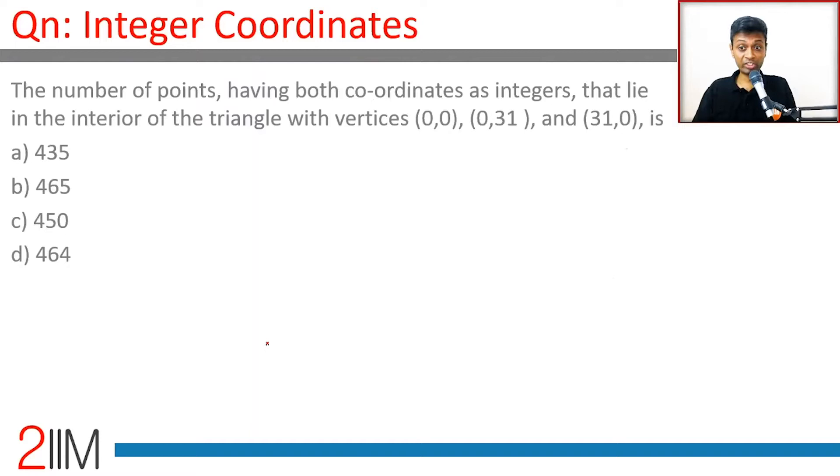The number of points having both coordinates as integers that lie in the interior of the triangle with vertices (0,0), (0,31), and (31,0). Luckily enough, 31 and 31 make this a nice triangle.